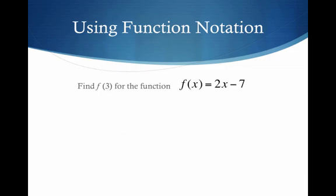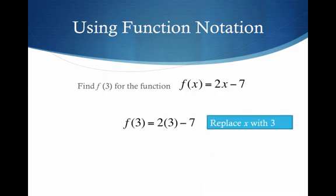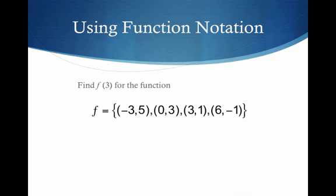Let's find f of 3 for this function, f of x equals 2x minus 7. What do we need to do? We need to replace the x with the 3. And so I get 2 times 3 minus 7, or negative 1.